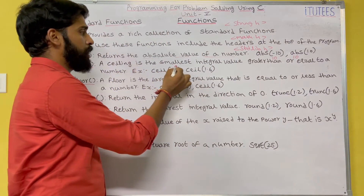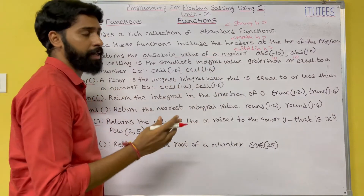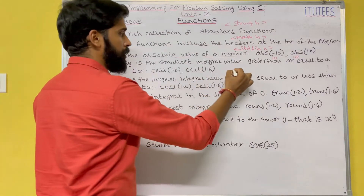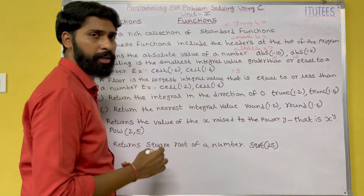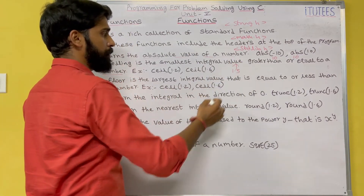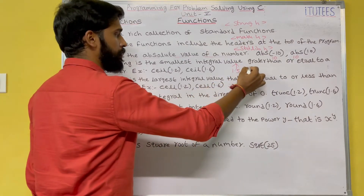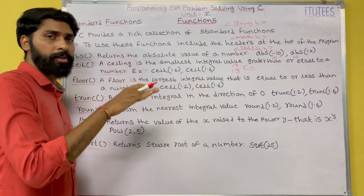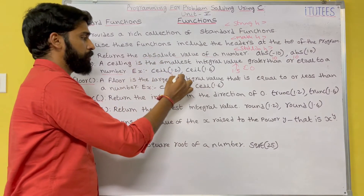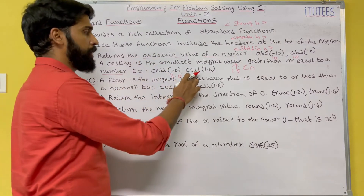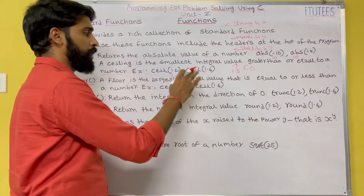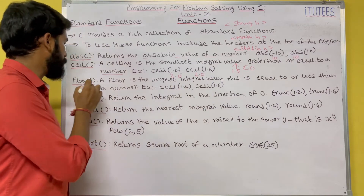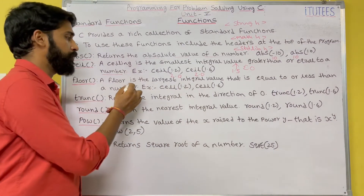Next function is ceil(). The ceiling is the smallest integral value greater than or equal to a number. For example, ceil(1.5) returns 2.0. ceil(1.2) also returns 2.0, and ceil(1.6) also returns 2.0 as output.